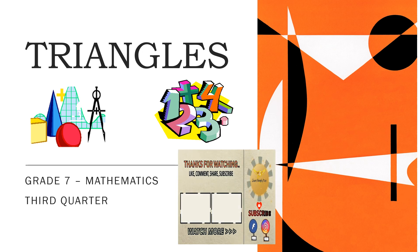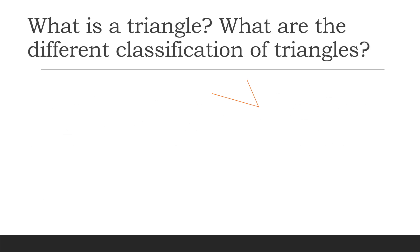Our lesson for today is about triangles. This is for Grade 7 Mathematics, third quarter. So, what is a triangle? What are the different classifications of triangles? A triangle is a polygon with three sides.